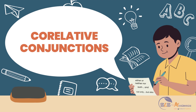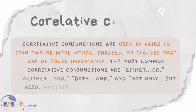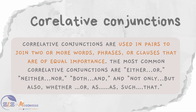Now let us learn about the next type of conjunction: the correlative conjunction. Correlative conjunctions are used in pairs to join two or more words, phrases, or clauses that are of equal importance. The most common correlative conjunctions are: either/or, neither/nor, both/and, not only/but also, whether/or, as/as, and such/that. They create a relationship of balance and parallelism between the elements they join.